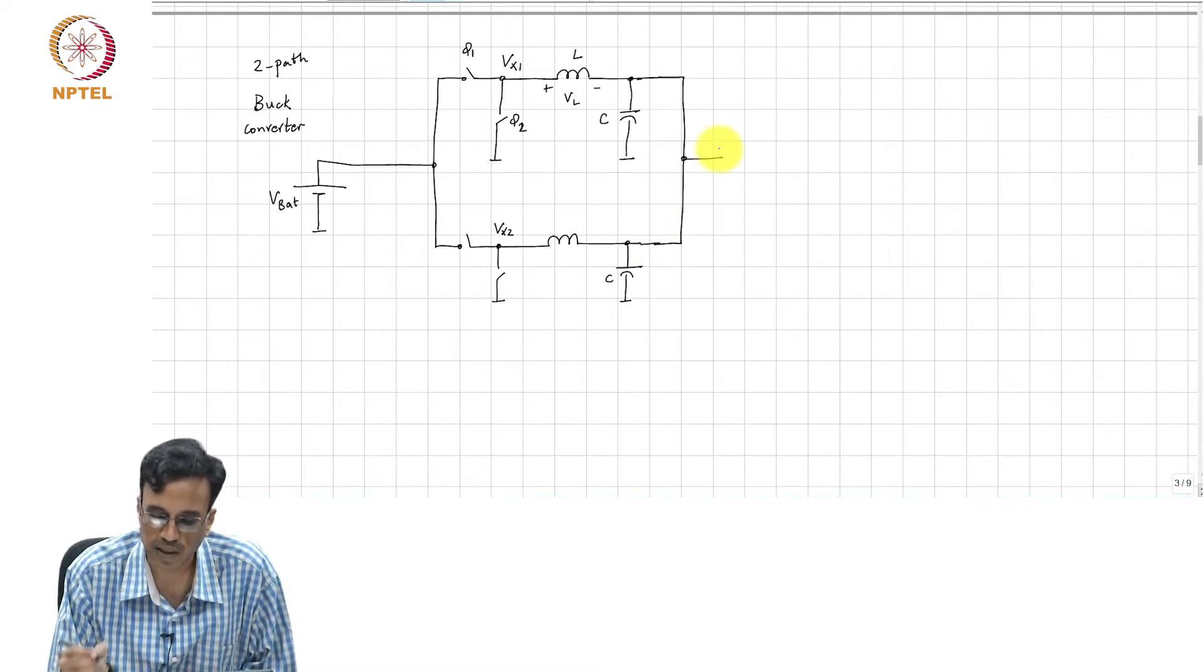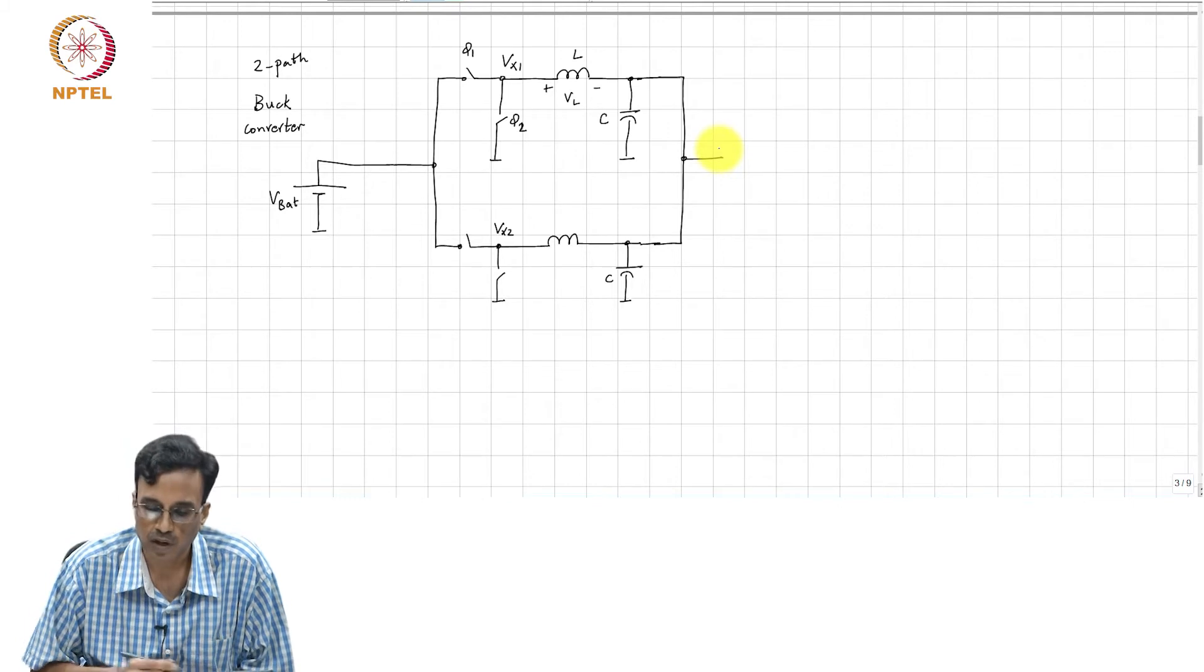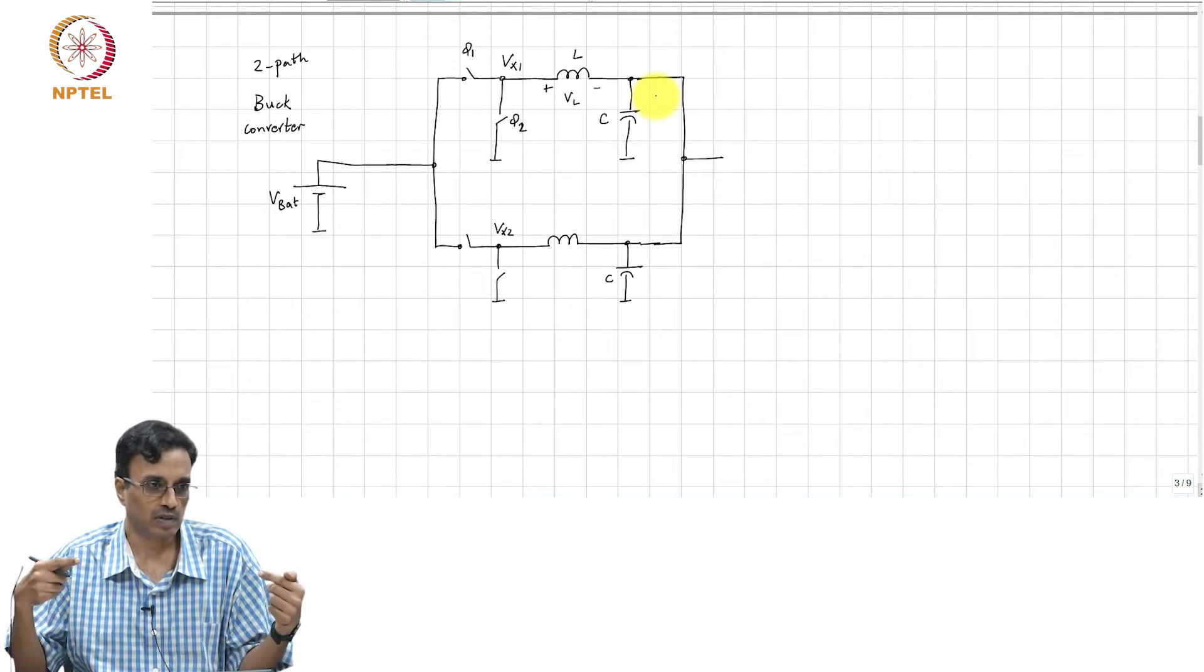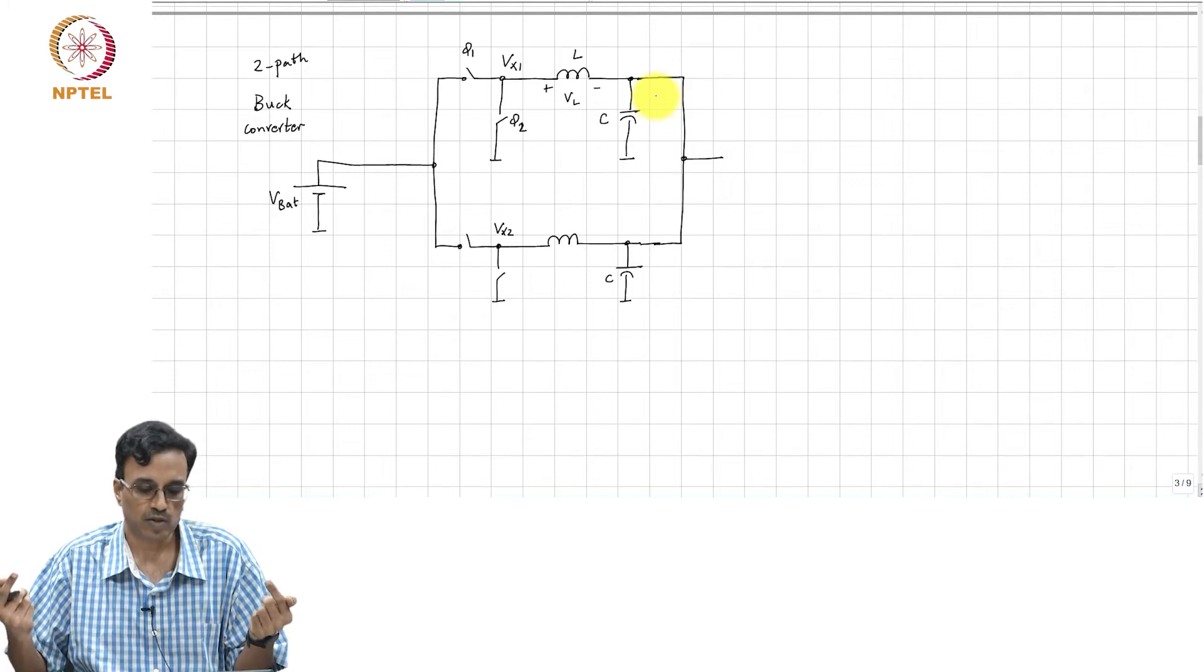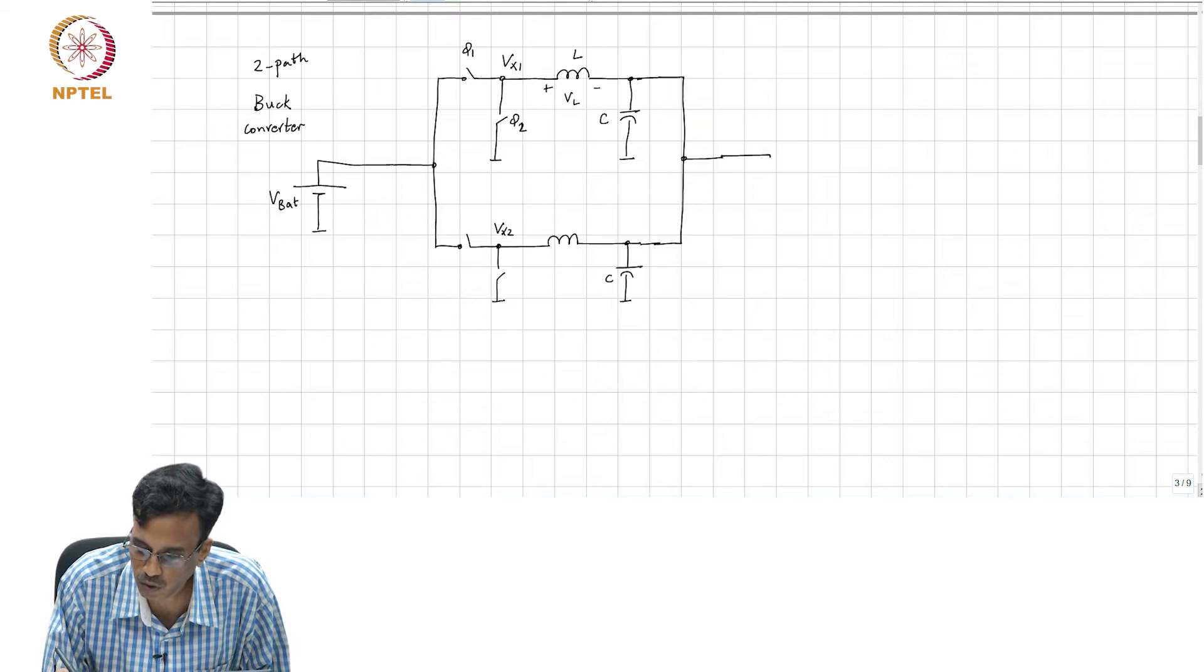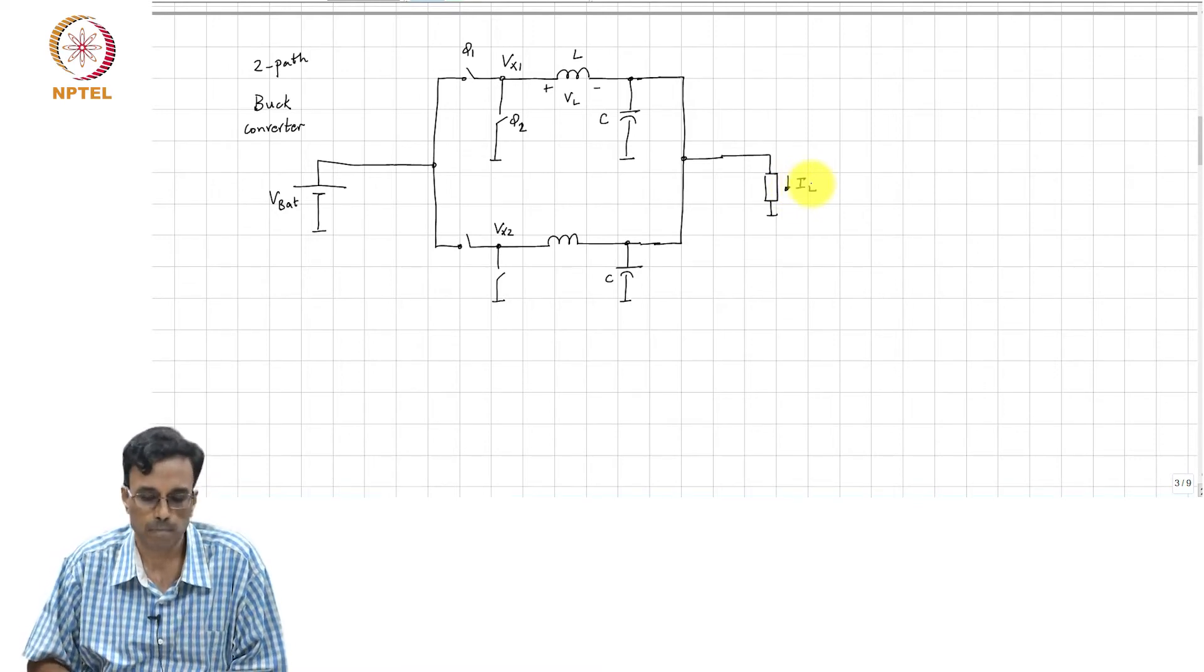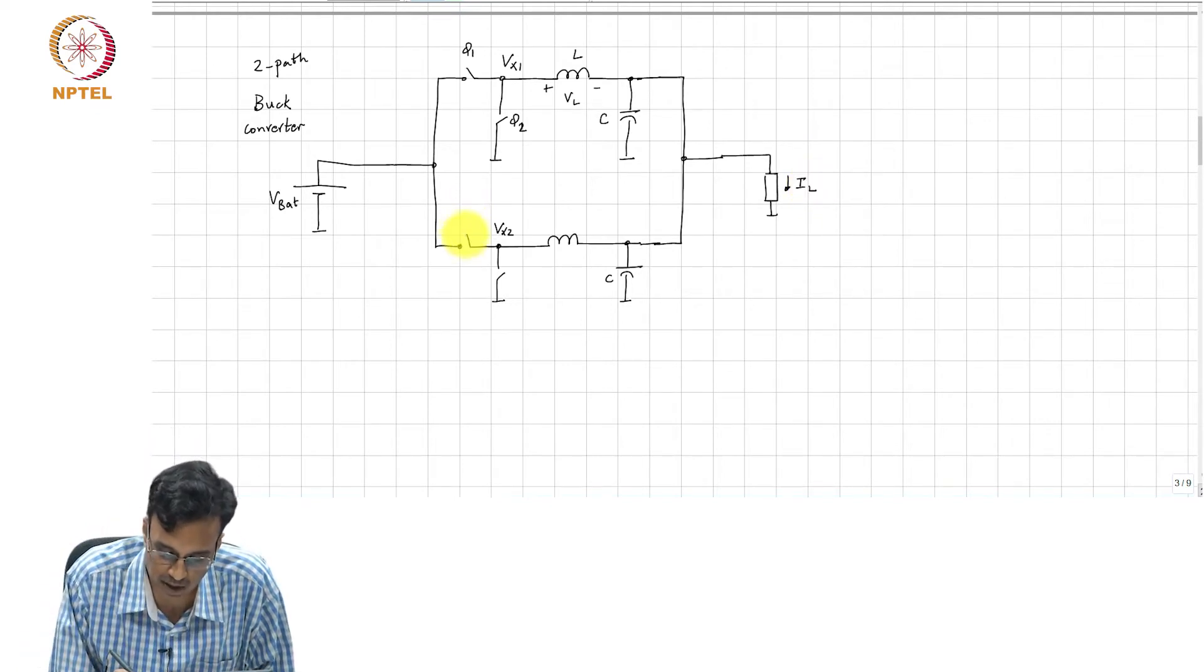If you connect two outputs together, what happens? The Thevenin equivalents just basically come in parallel. The Thevenin open circuit voltage will be divided by two. The DC component of the voltage will remain the same. This is now IL. What should this switch be driven by?